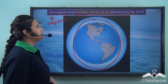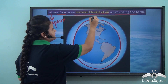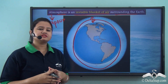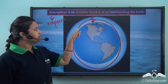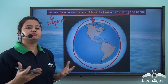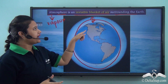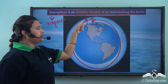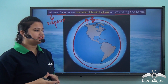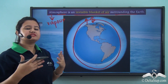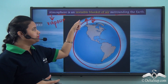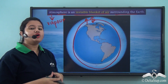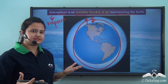This layer extends for several thousand kilometers above the Earth's surface. However, this layer is not uniform throughout. As we go higher and higher, the air becomes thinner and thinner and it gradually fades away or blends with space, and we actually do not know where the atmosphere ends.